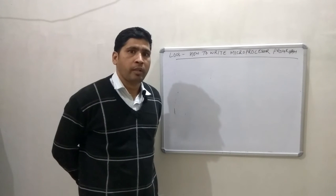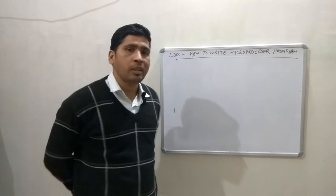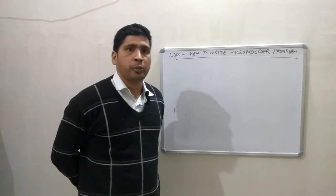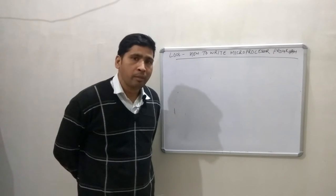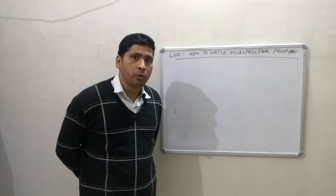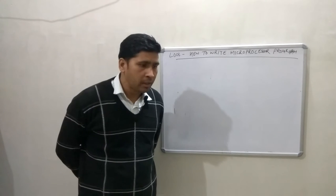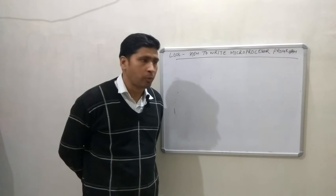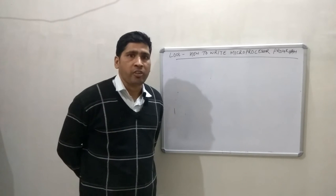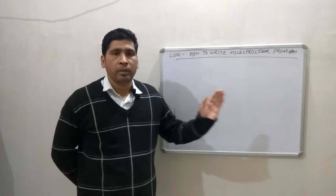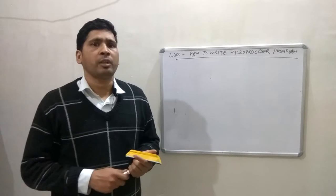This is my third lecture on microprocessor programming. In this lecture I am going to discuss how we can write a microprocessor program. Taking the example of a microprocessor kit, when you write a program you must first provide a RAM address — the address from which you are going to start the program. Basically, each instruction should be placed at a RAM address.